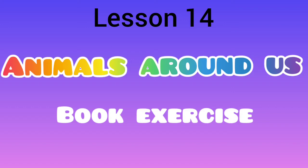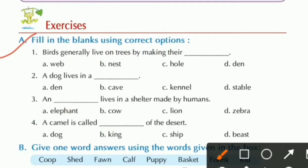Good morning. Today we will be doing book exercise of lesson Animals Around Us. Section A: Fill in the blanks using correct options. First one is: